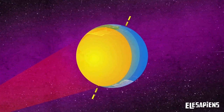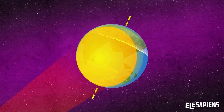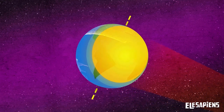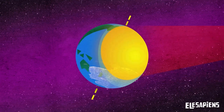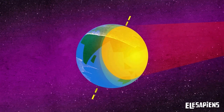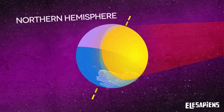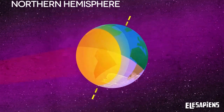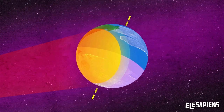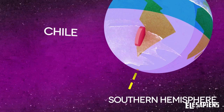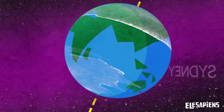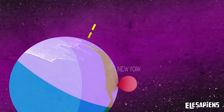Due to the Earth's tilt, one part of the planet receives the energy from the sun in a more direct and longer way than the other, providing the typical heat and light of the summer. This occurs between June and August in the northern hemisphere, and from December to February in the southern hemisphere. When it is summer in one hemisphere, it is winter in the other.